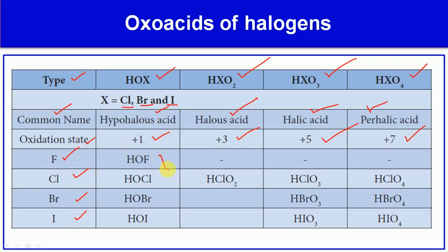In the hypohalous format, all halogens form an acid. These are: hypofluorous acid (HOF), hypochlorous acid (HOCl), hypobromous acid (HOBr), and hypoiodous acid (HOI). We need to remember these formulas and names.